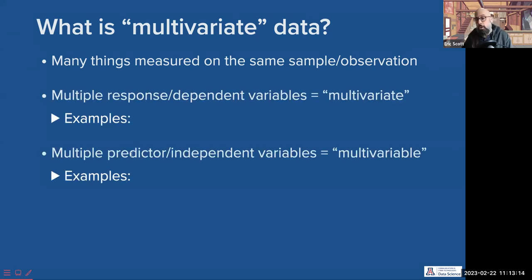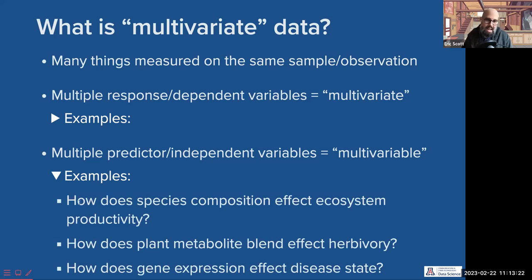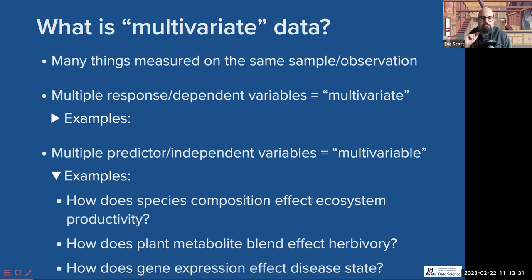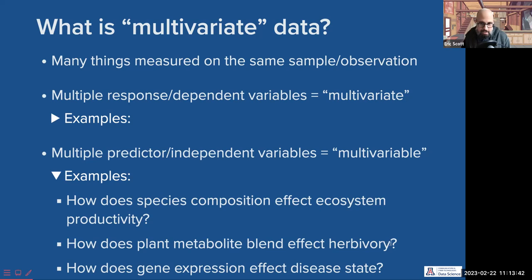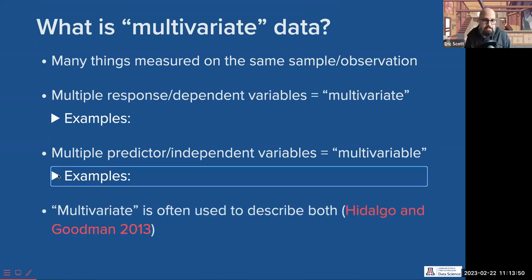Technically, when we have multiple predictors, this is called multivariable data or multivariable analysis. That would be: how does species composition affect ecosystem productivity, where the response variable is ecosystem productivity — one thing — and our predictors are species A, species B, species C, et cetera. Or how does plant metabolite blend affect whether a plant gets eaten or not? In practice, both of these things are often called multivariate, and I think that's fine.